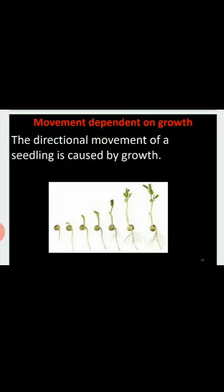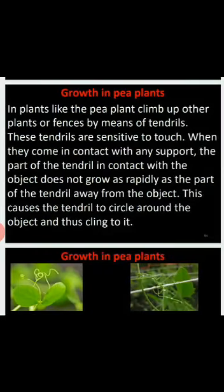Now let us discuss growth-dependent movements. You might have noticed the tendrils of pea plants — they are touch-sensitive and climb on another plant. Whenever they find a support, the part of the tendril towards the support does not grow, while the part of the tendril away from the support grows. As a result, the tendril circles and clasps the support.